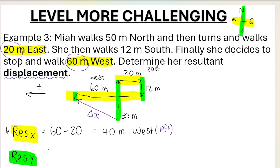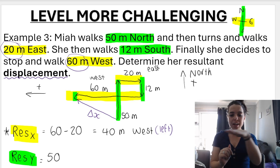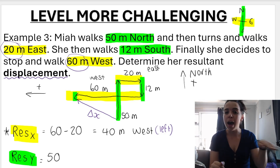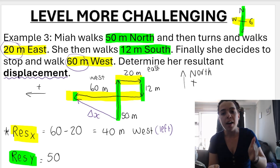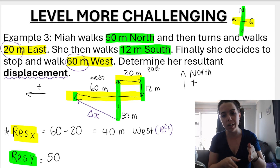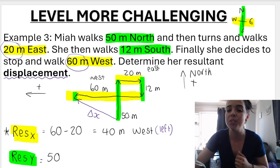For the y direction, let's choose north as positive. She walked 50 meters north — positive 50 — and 12 meters south, which is the negative direction, so we subtract. That gives 50 minus 12 equals 38 meters. Because it's a positive answer, it's going north. It's very important to always consider east-west together and north-south together, because they are along the same axis. That's why we group those separately.